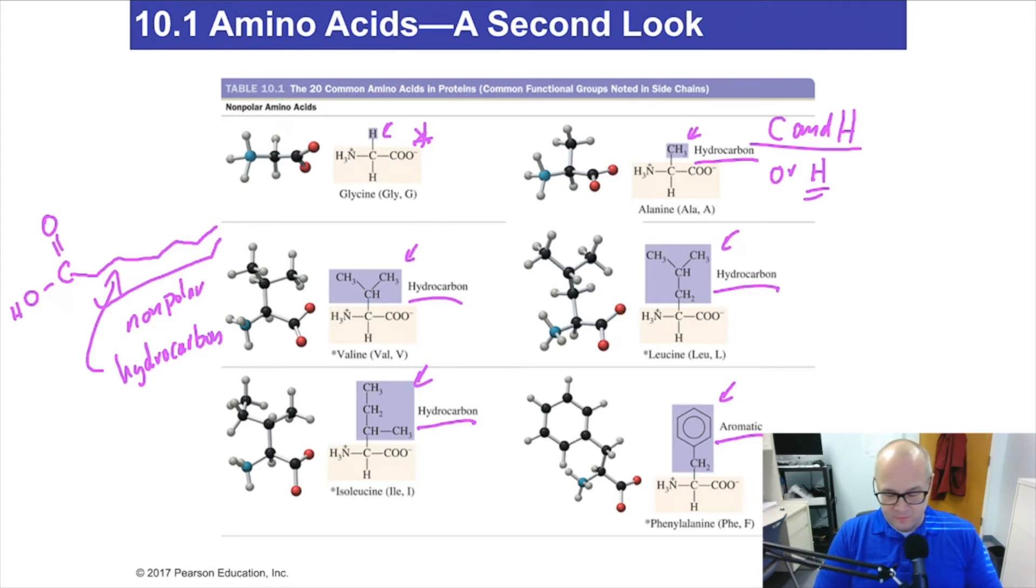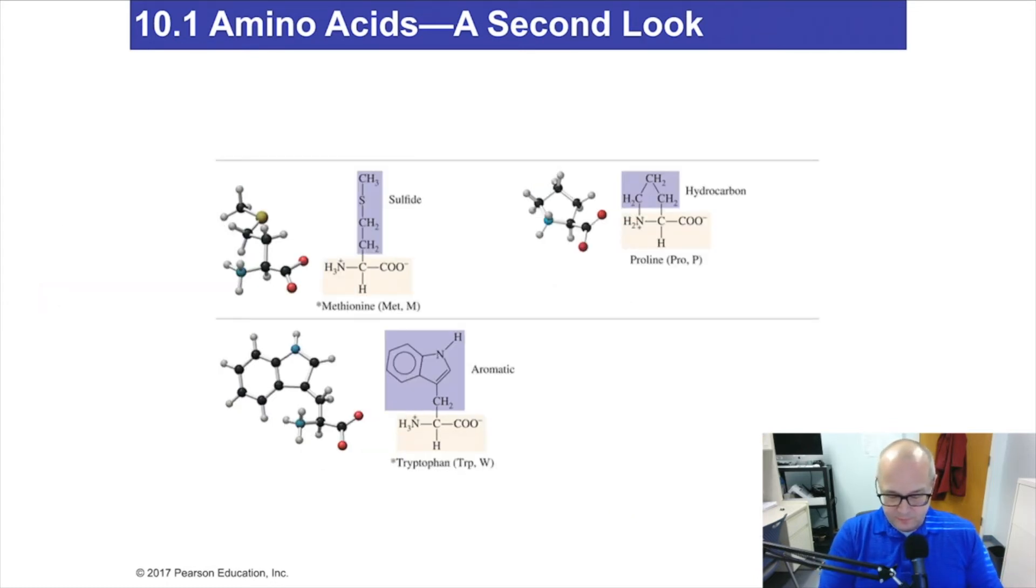Now, there are exceptions to that. For example, here's a sulfide. This one is nonpolar. For reasons we don't really talk about in this course because it's a little bit beyond the scope, it just is nonpolar. Here's one. It has a nitrogen in the ring. You would think it would be polar because of the nitrogen. It can hydrogen bond. But for reasons that we don't really talk about in this class, it is nonpolar, not polar. And it has to do with stuff that if you take organic chemistry, you'll get it explained to you thoroughly.